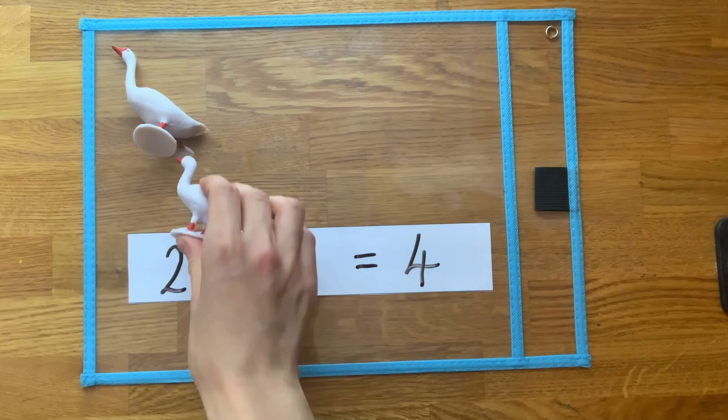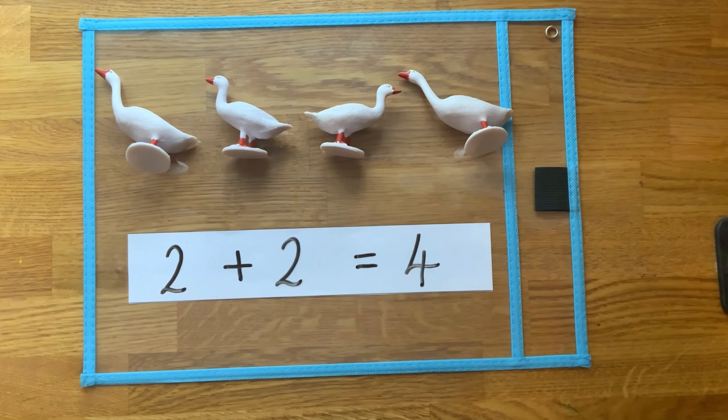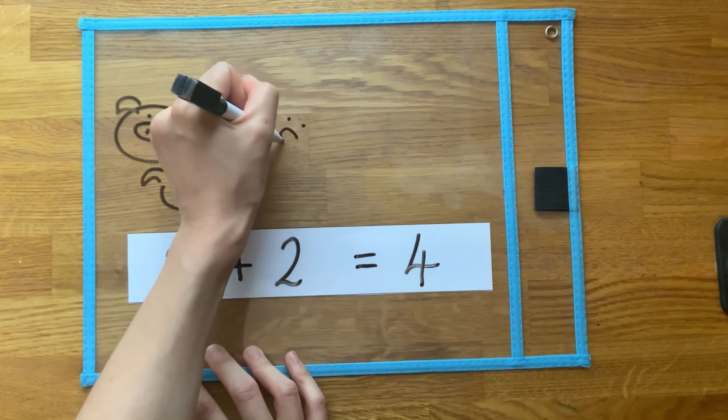Alternatively, you could provide children with a written number sentence. Can they represent the number sentence using objects or toys, or even by drawing a picture?